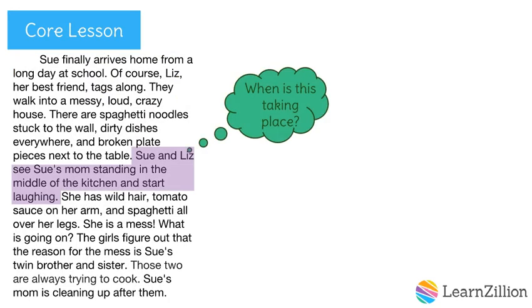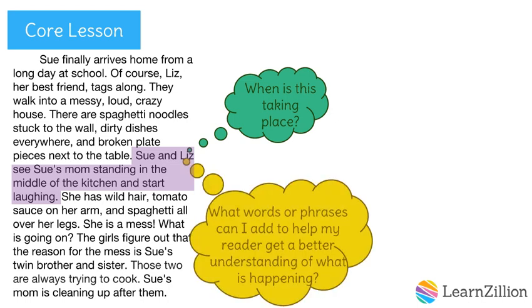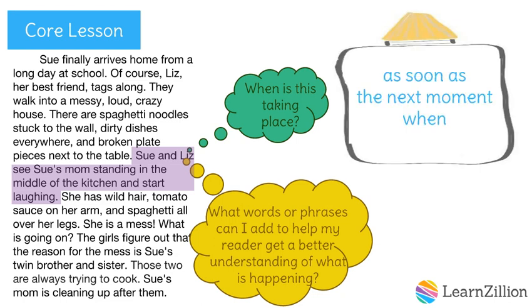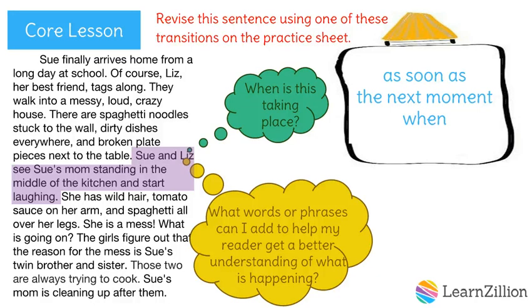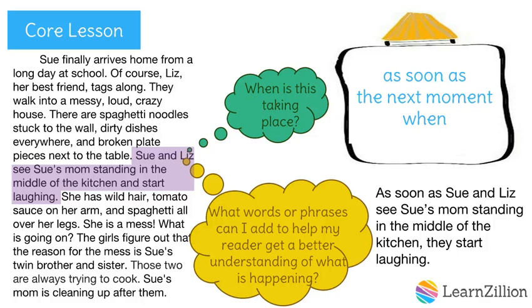For this sentence, we need to think again — when is this taking place? Well, they're happening almost at the same time, when they arrive at the house. Good transitions to choose from are 'as soon as,' 'the next moment,' and 'when.' Your job is to revise this sentence using one of these transitions on the practice sheet. Pause the video and press play again when finished. Let's compare our revisions: 'As soon as Sue and Liz see Sue's mom standing in the middle of the kitchen, they start laughing.' I changed the subject and half the predicate into a dependent clause to make it clear these two things happened almost at the same time.